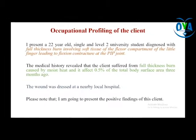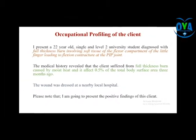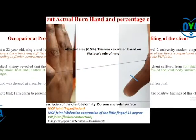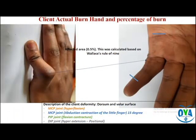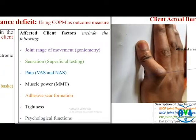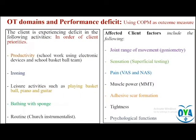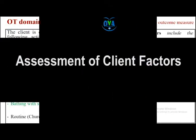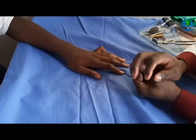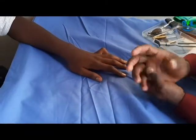The techniques and protocol presented in the program were based on the client's functional needs in terms of occupation and the rationale behind the deficit — that is, the client factors. The occupational performance deficit mentioned in this video was based on the client's order of priorities and importance, justified by the Canadian Occupational Performance Measure.